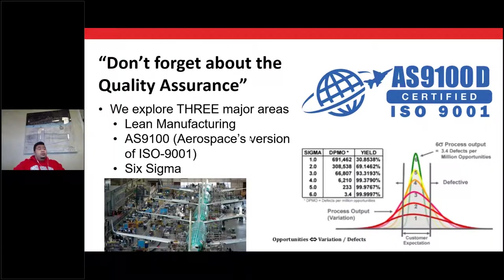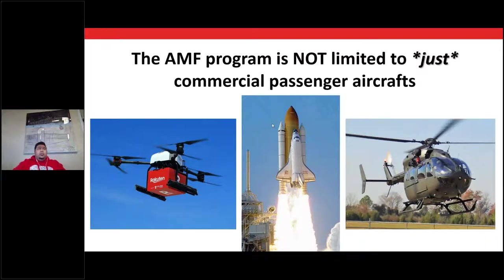And who can forget quality assurance? We'll explore three major areas: Lean Manufacturing, AS9100 — the aerospace quality standard based on ISO 9001 — and Six Sigma. All of that will be explained in great detail. The AMF program is not just limited to commercial aviation; we also give you an introduction to helicopters, with a dedicated week and a lab on it. We also introduce the newest form in aviation — unmanned air vehicles, UAVs or drones — which Amazon and many companies are working heavily on.